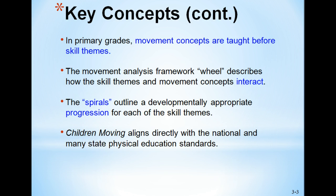The movement analysis framework wheel, which is in your book — the blue and green circle I gave you a copy of — describes how the skill themes and movement concepts interact. The spirals in your textbook outline a developmentally appropriate progression for each skill theme, starting at the lowest level, pre-control, at the bottom of the spiral, and going up to proficiency at the top. The textbook, Children Moving, aligns directly with the national and South Carolina state standards.